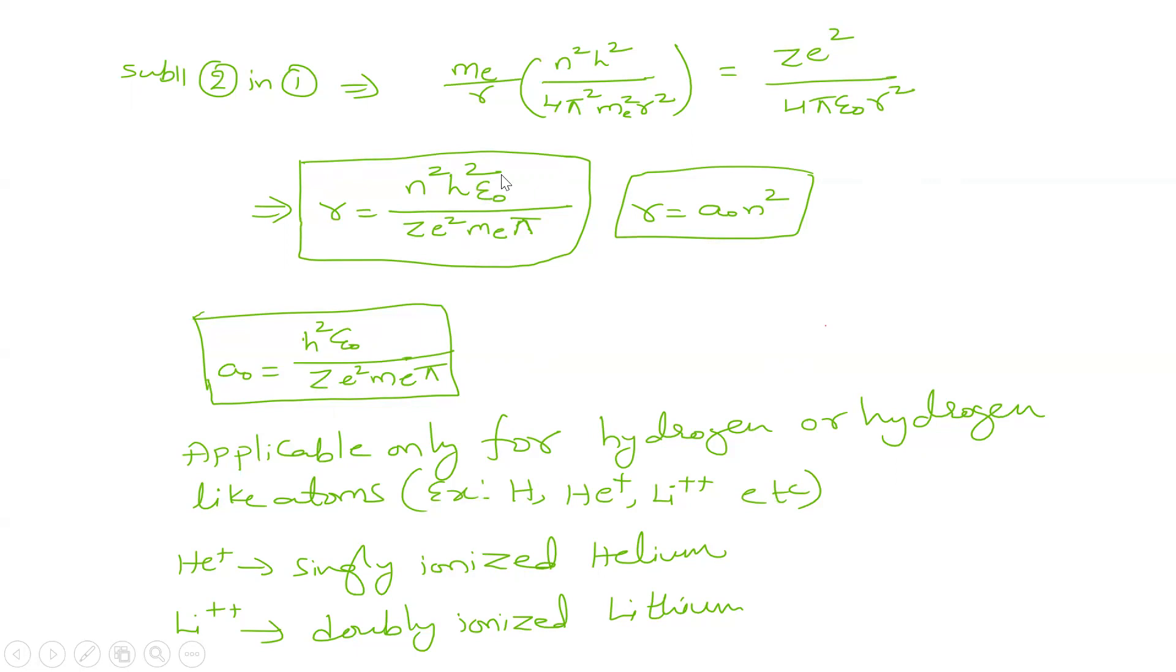H is a constant, epsilon naught is a constant, Z is also fixed, charge of electron is constant, mass of electron is constant, π is constant. So we are representing this with a single constant a₀ times N². N is variable - that is the orbit number.